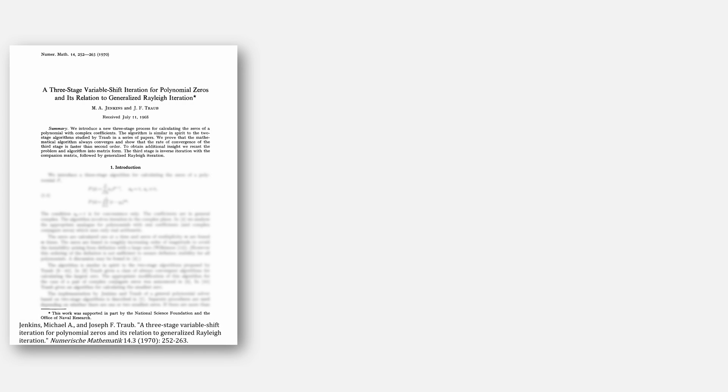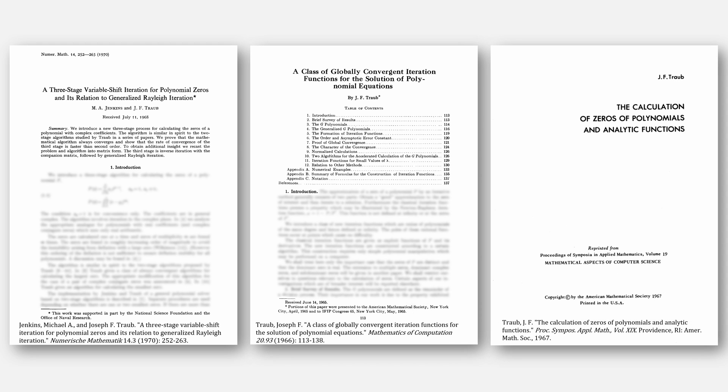This method was first published in a three-stage variable shift iteration for polynomial zeros by Jenkins and Traub, but before I actually dive into that paper, I actually need to discuss these two earlier papers by Traub. Let's look at the one in the middle.